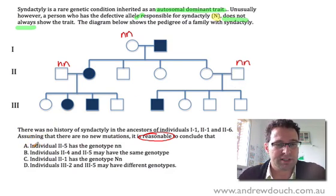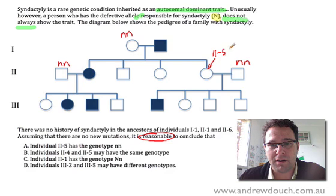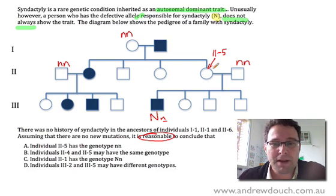All right, then it goes on, and we have our four choices. So let's work these through. So individual 2-5 has the genotype little n, little n. So 2-5 is this person here. Does this person have the genotype little n, little n we're saying? Well, look, because their child here has syndactyly, the child must have a big N, and probably a little n, or must be a little n, because this child's father only has little n. So the father must have given this child a little n. So they have a little n, but they've got syndactyly, so they've definitely got a big N, which must have come from mum.